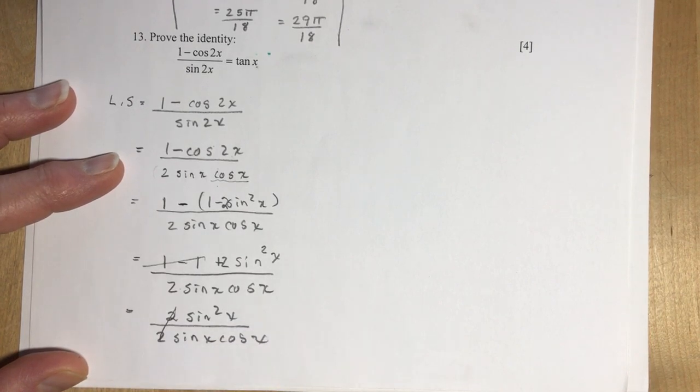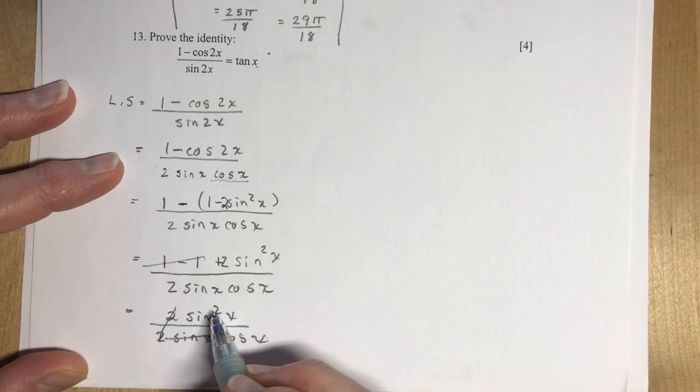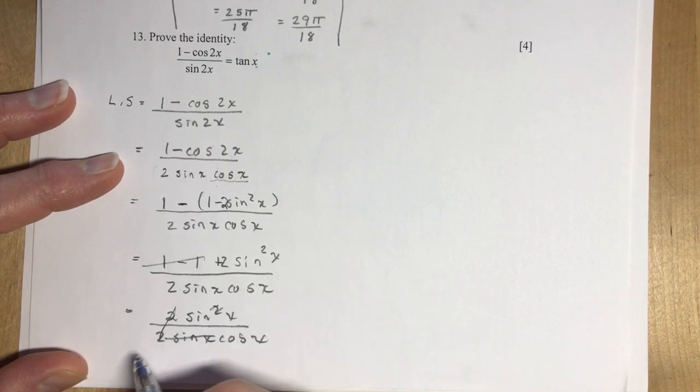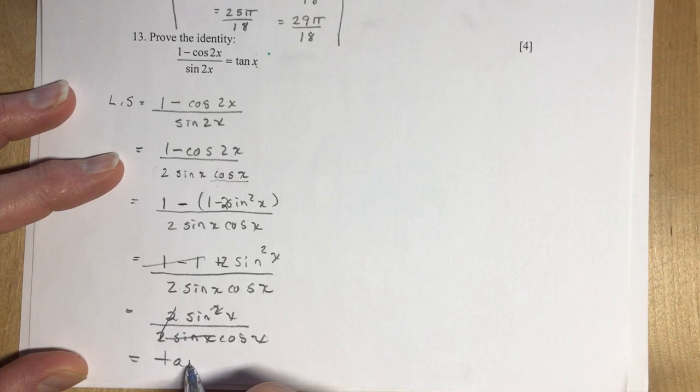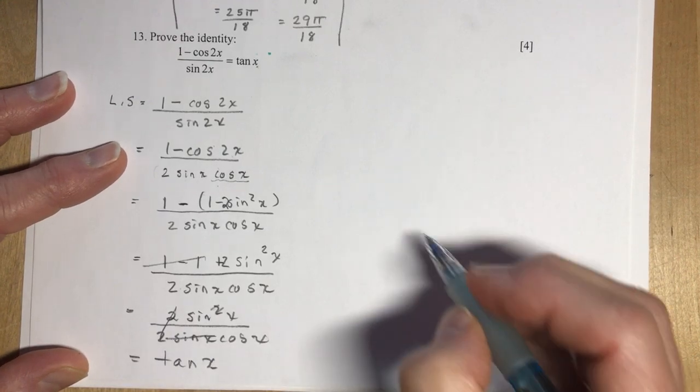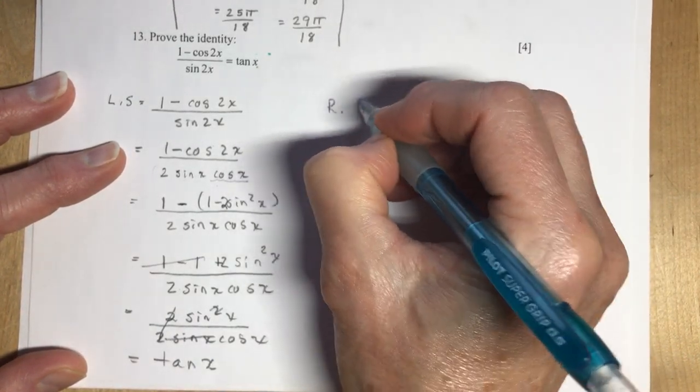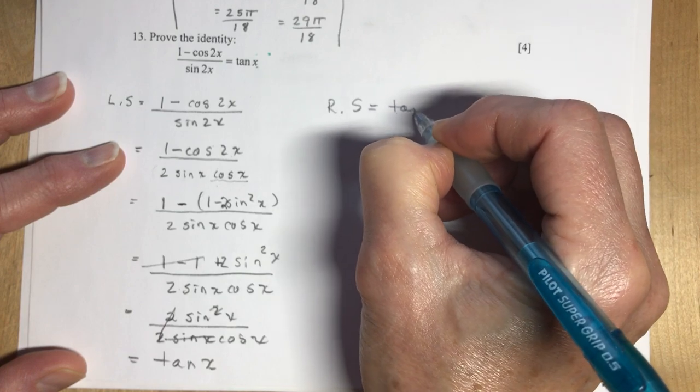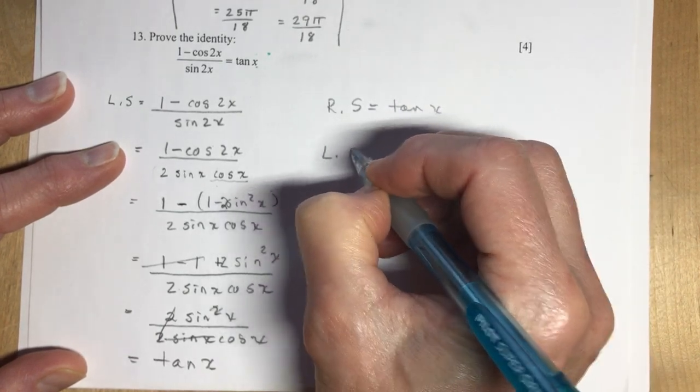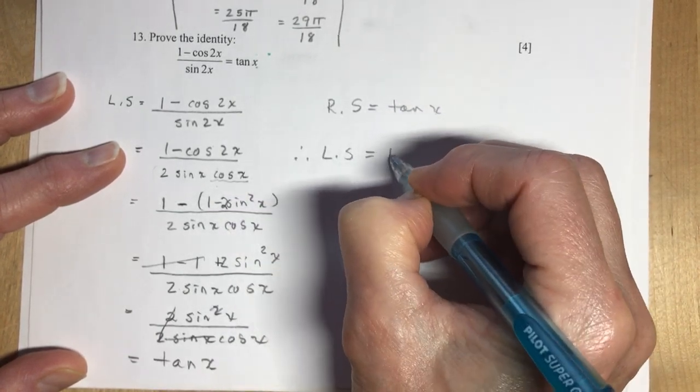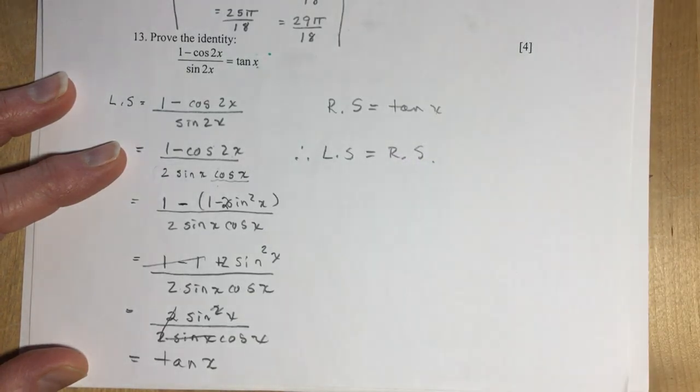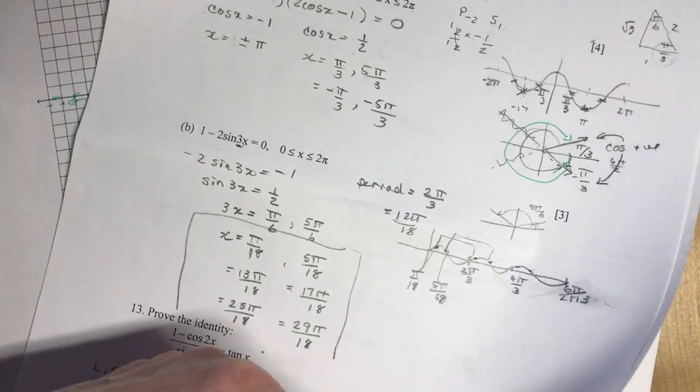Over 2 sine x cos x. And the 2s cancel. And 1 sine x cancels with 1 of these. And I have sine x over cos x, which is tan x. So you should also write out, the right side was tan x. Left side equals right side. And you have proven your little identity. That's cold season, isn't it? Anybody else out there have a cold?